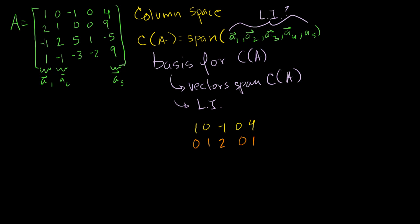Now we want to zero out the third row's first entry. Replace that row with itself plus the first row: -1 plus 1 is 0; 2 plus 0 is 2; 5 minus 1 is 4; 1 plus 0 is 1; -5 plus 4 is -1. For the fourth row, replace it with itself minus the first row: 1 minus 1 is 0; -1 minus 0 is -1; -3 minus -1 is -2; -2 minus 0 is -2; 9 minus 4 is 5. We've got our first pivot column.